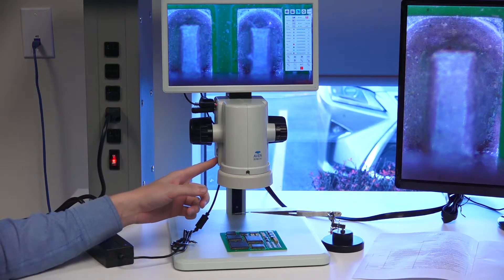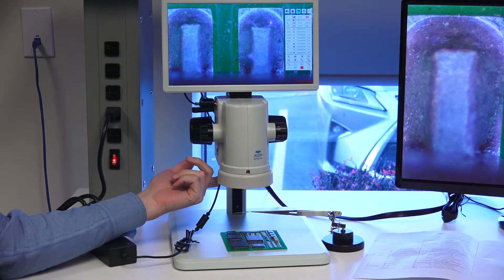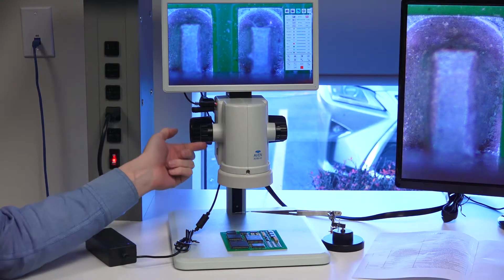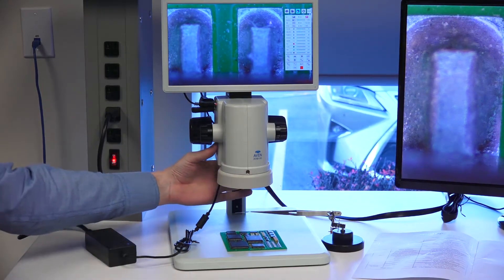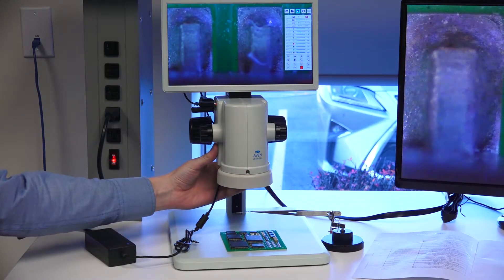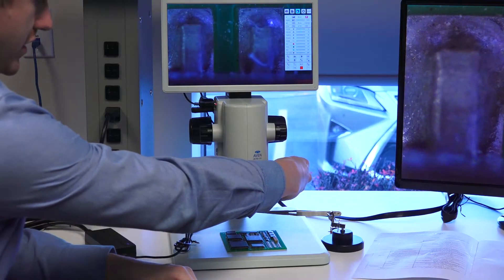There's an on button here on the left side, and then underneath is where you'll plug in the power. The ring light has a switch on the back of it, and then there's a brightness adjustment dial on the right.